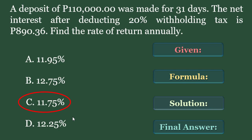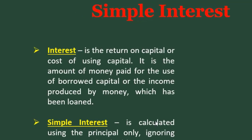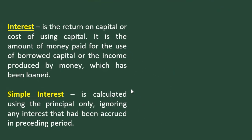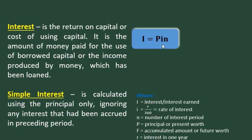Before I end this video, let me discuss some basic information about simple interest to help you solve related simple interest problems. For simple interest concepts: interest is the return on capital or cost of using capital — it is the amount of money paid for the use of borrowed capital or income produced by money that has been loaned. Simple interest is calculated using the principal only, ignoring any interest accrued in preceding periods. The formula: Interest equals Principal times rate of interest times number of interest periods. The future worth equals present worth plus interest, which derives to F equals P times (1 plus I times N).